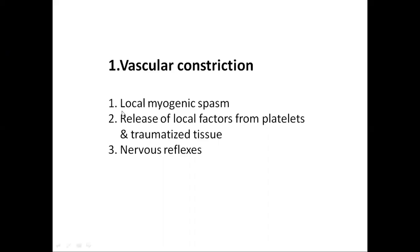Whenever there is damage to the blood vessel, there is release of certain vasoconstriction substances from the damaged blood vessels, such as thromboxane A2, which in turn causes contraction of the smooth muscles of the vessel wall, ultimately resulting in vasoconstriction of the vessel.